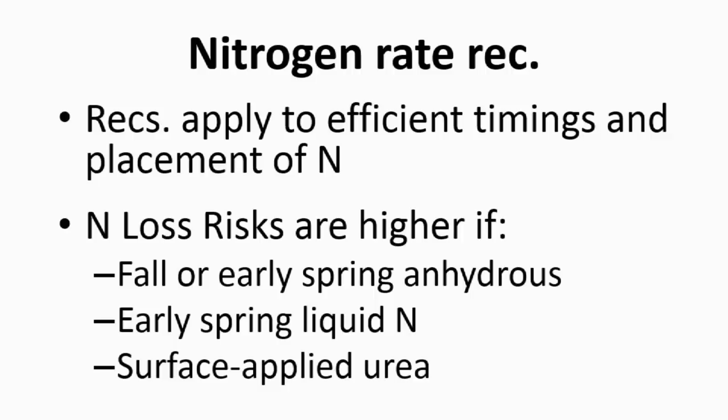In the eastern Corn Belt, nitrogen loss risks are higher than in the northern or western Corn Belt because of the high rainfall in winter and early spring. We can lose nitrogen applied in the fall or early spring, even if applied as anhydrous. One practice that could be improved is to put nitrogen on closer to planting time or actually in-season. On average, a fall application might lose about 15% of nitrogen, and early spring about 10% — so there's an opportunity to either use less or make higher yields with the same amount by moving to spring application.